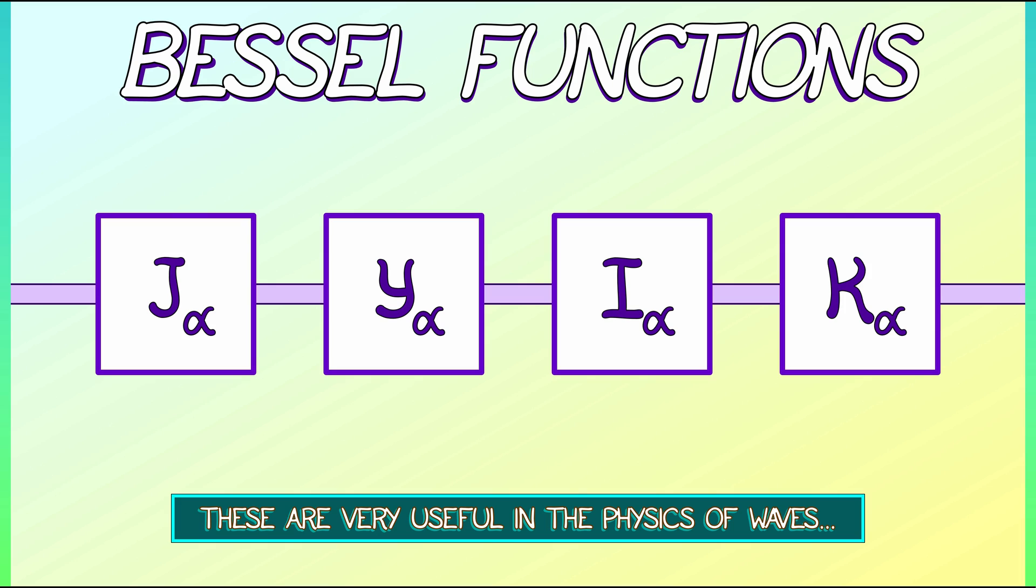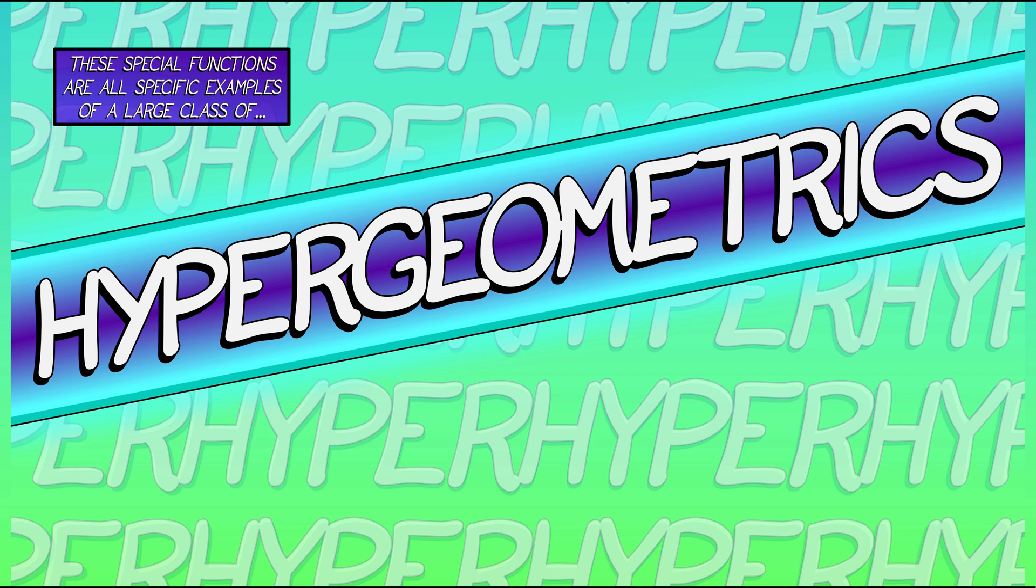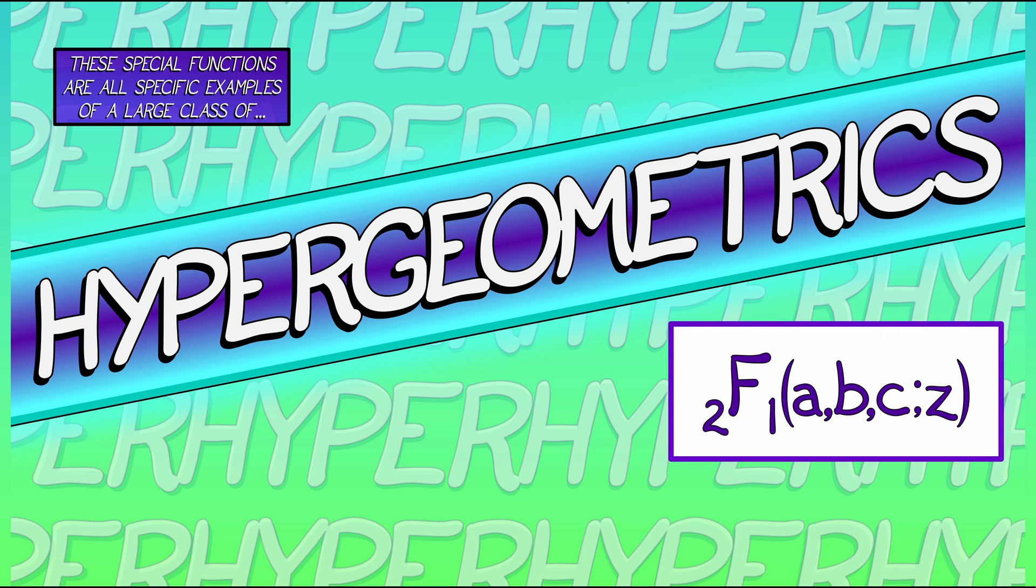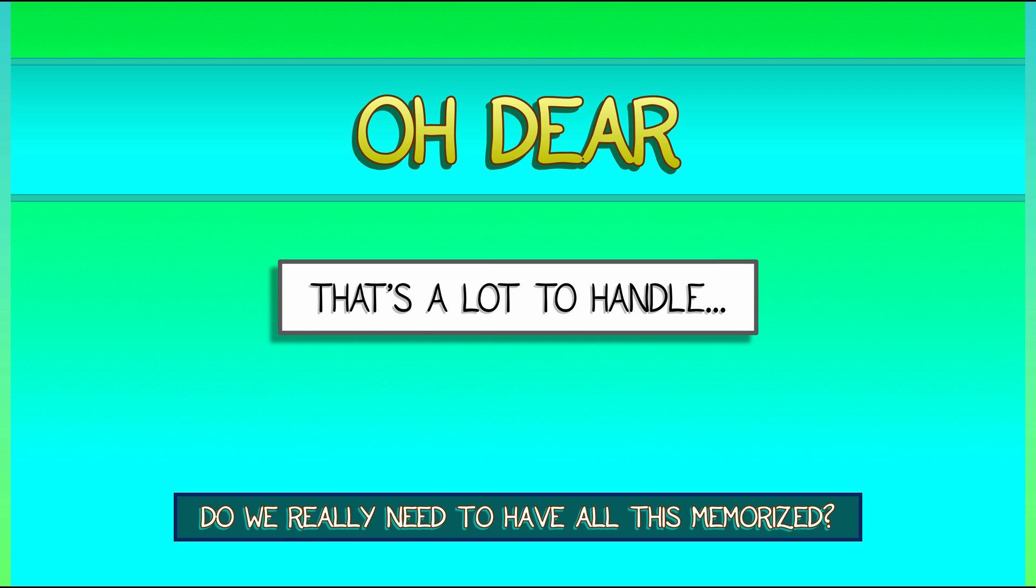There are so many other families of special functions. All of the ones that we've seen here, all of the functions that we've seen are very, very special examples of one very general class called hypergeometrics. The hypergeometric functions are an enormous and intricate class with an intricate and unfriendly notation of ₂F₁ with parameters A, B, C, Z. You got all these parameters, and A, B, and C, and then all these subscripts, 2 and 1, and what are we going to do? Oh, dear. I'm feeling a little overwhelmed. Do we really need to know all of these functions? Do I have to memorize all this stuff?